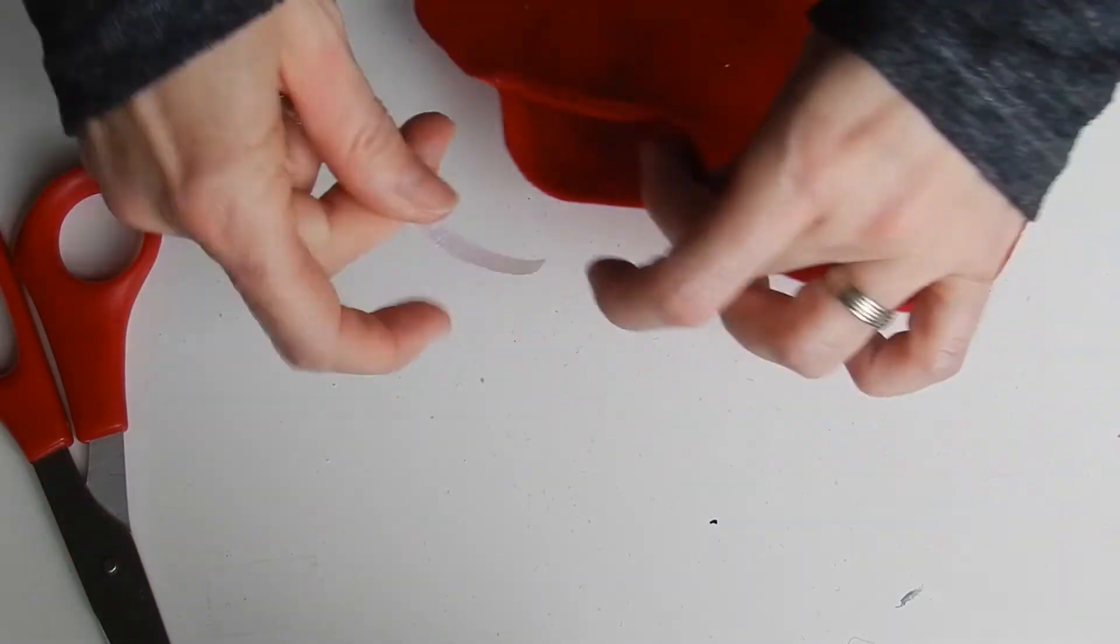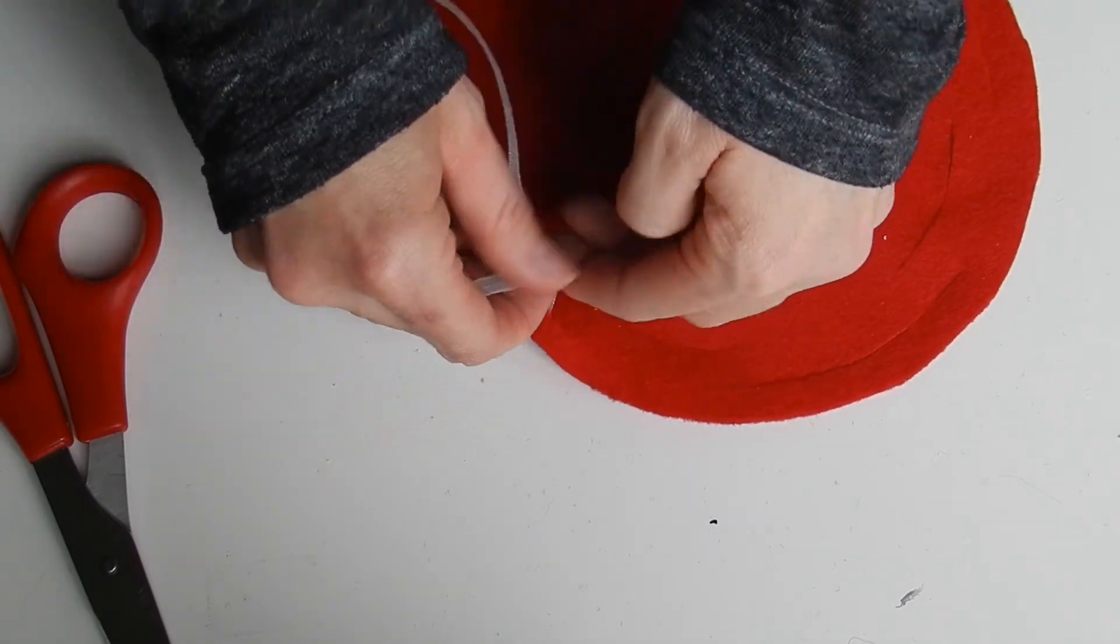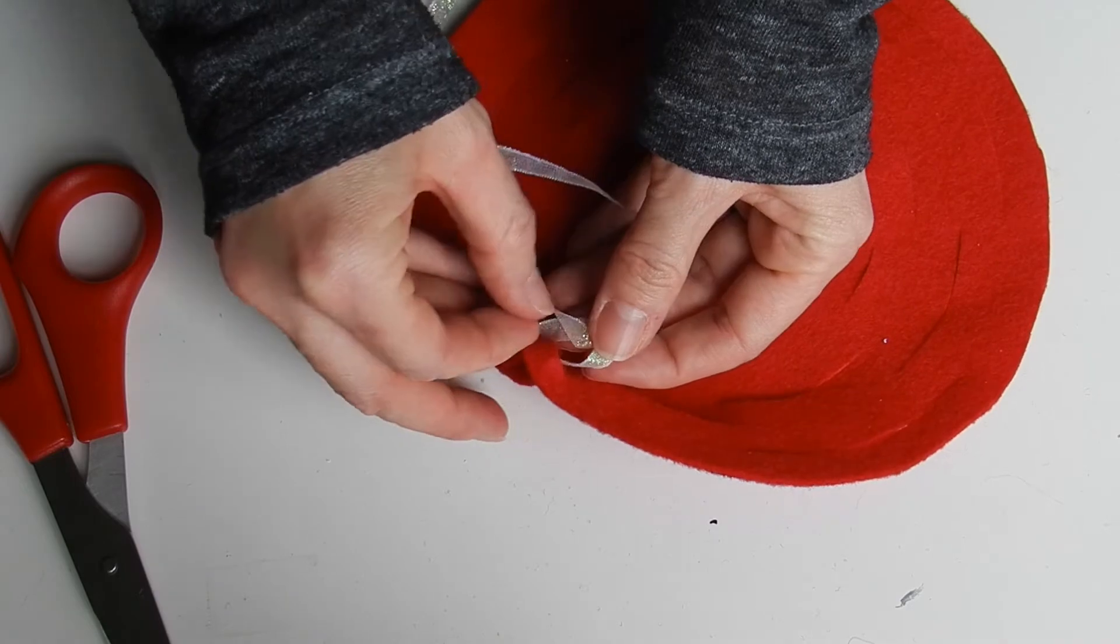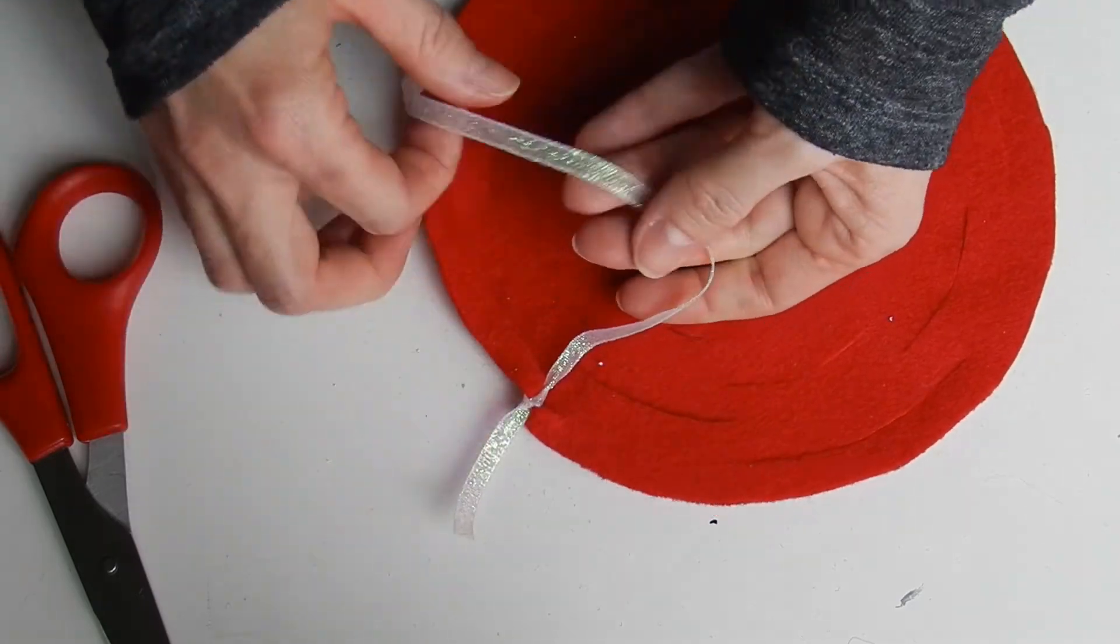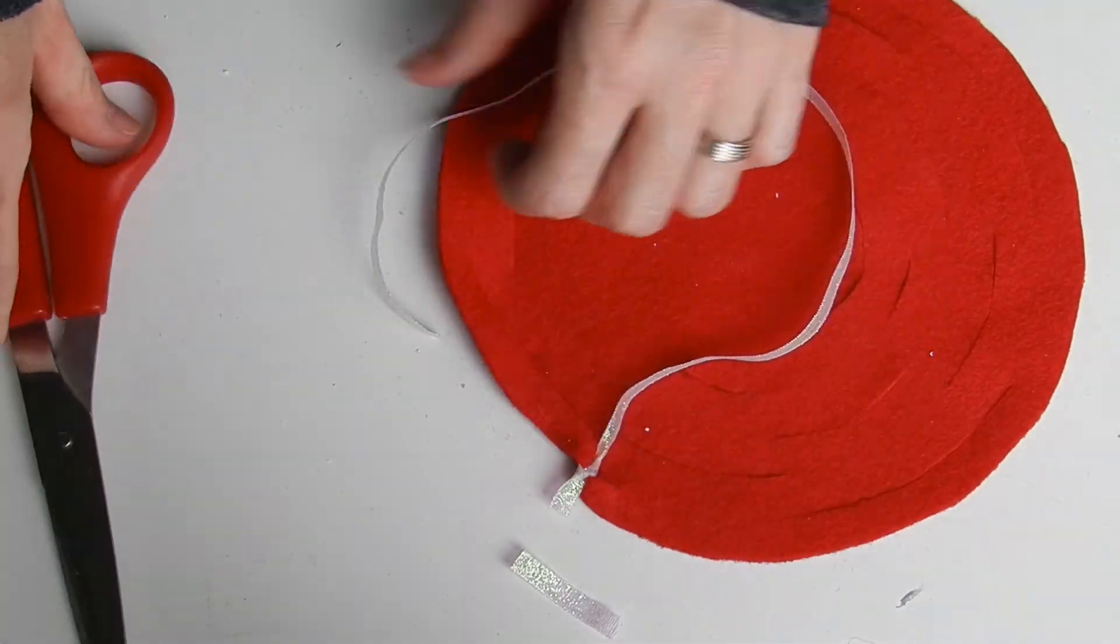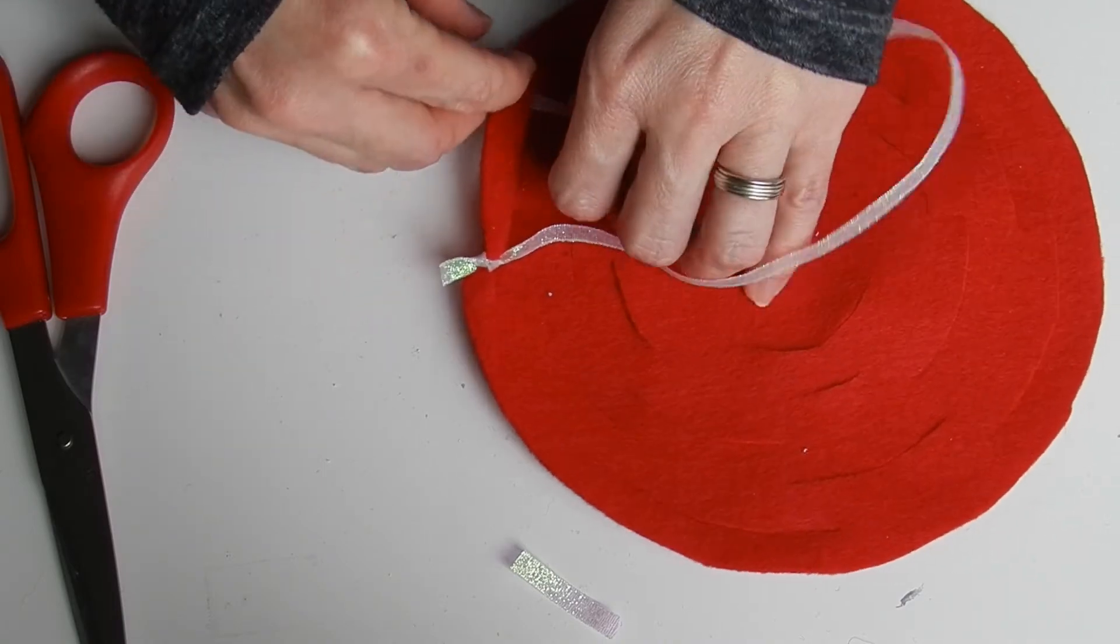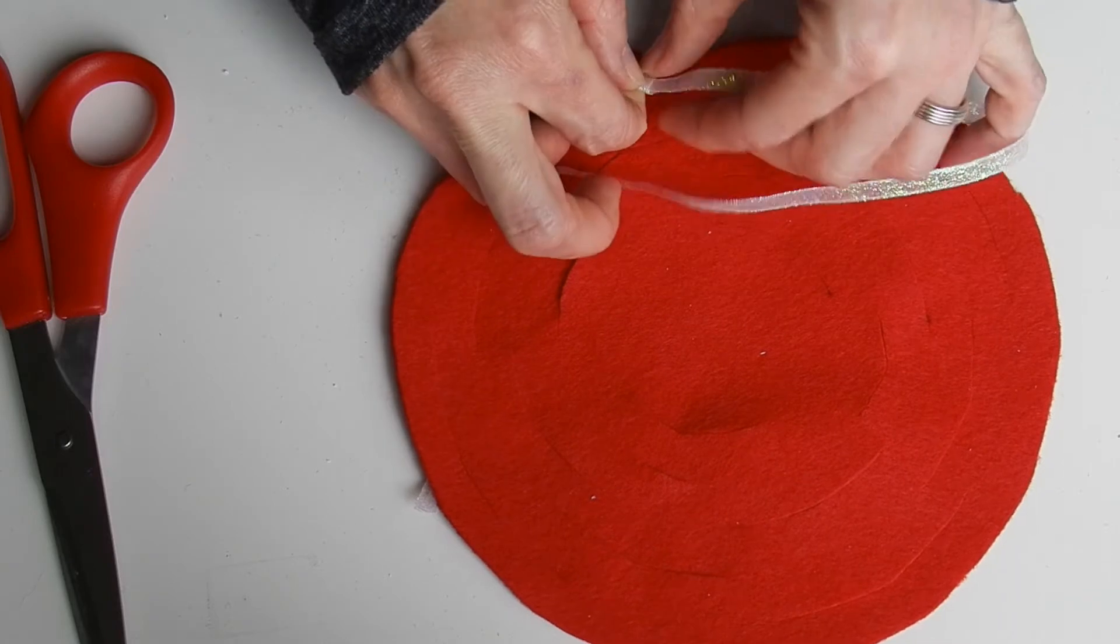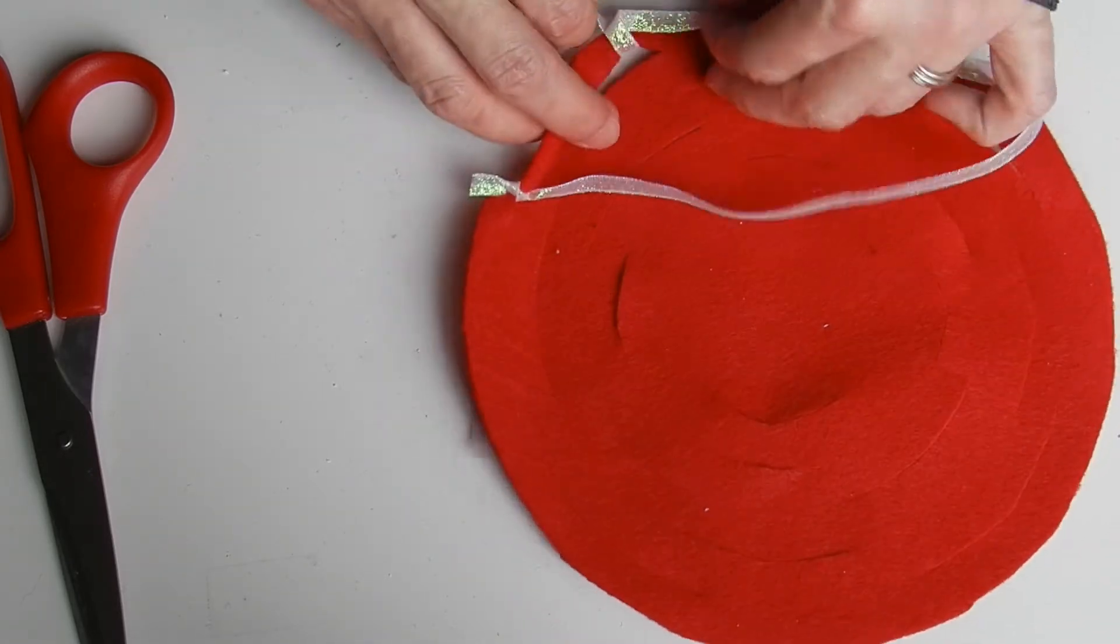Then you're going to take the outside, one of the outside cuts and you're going to take one end of the ribbon and tie a quick knot nice and tight and you're going to trim off any excess ribbon that you have. And then you're going to go along that slit that you've made and tie the other end of the ribbon to the other end of the slit.